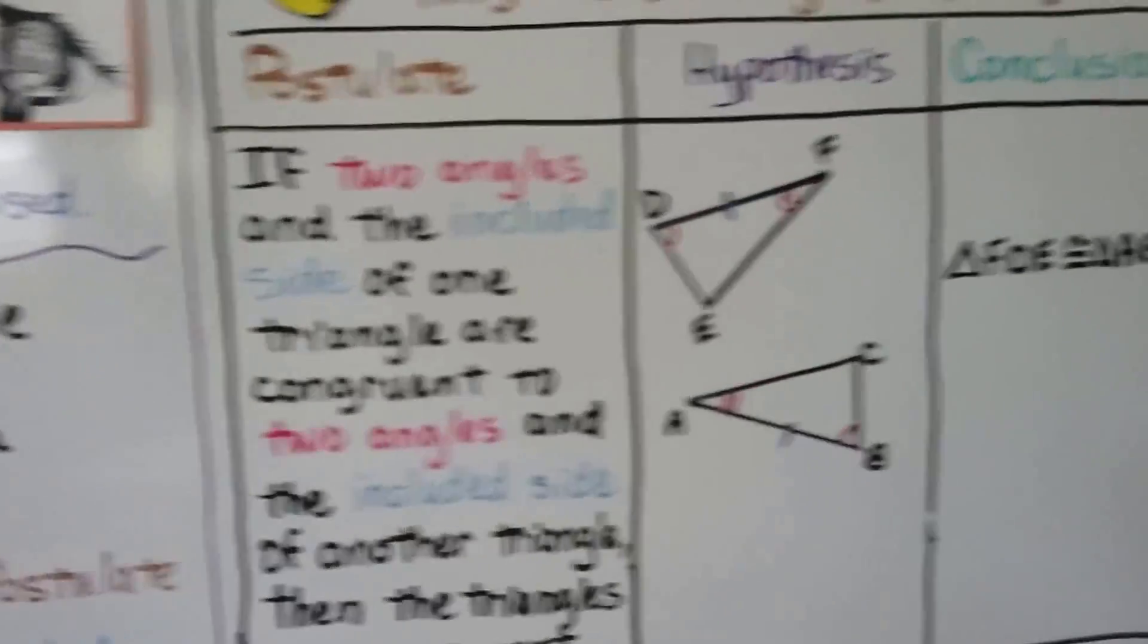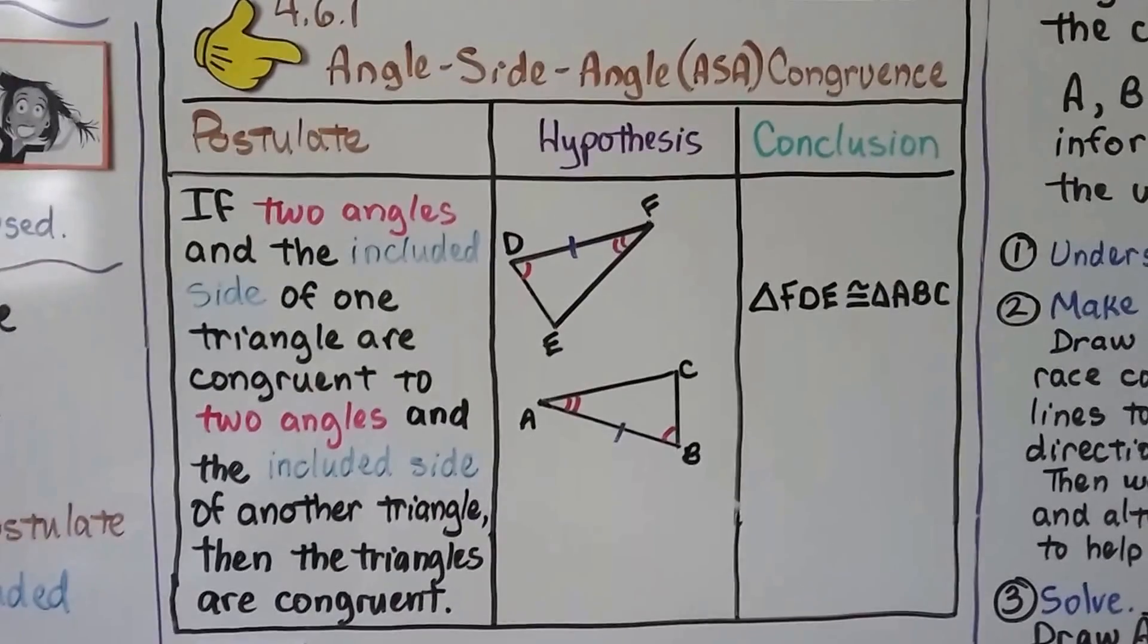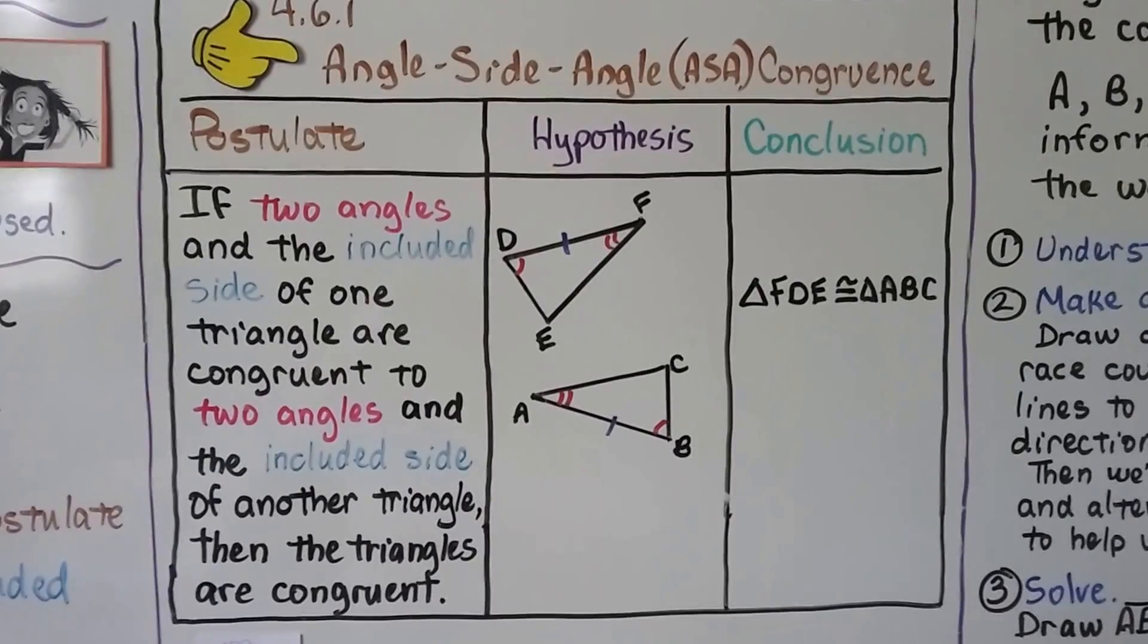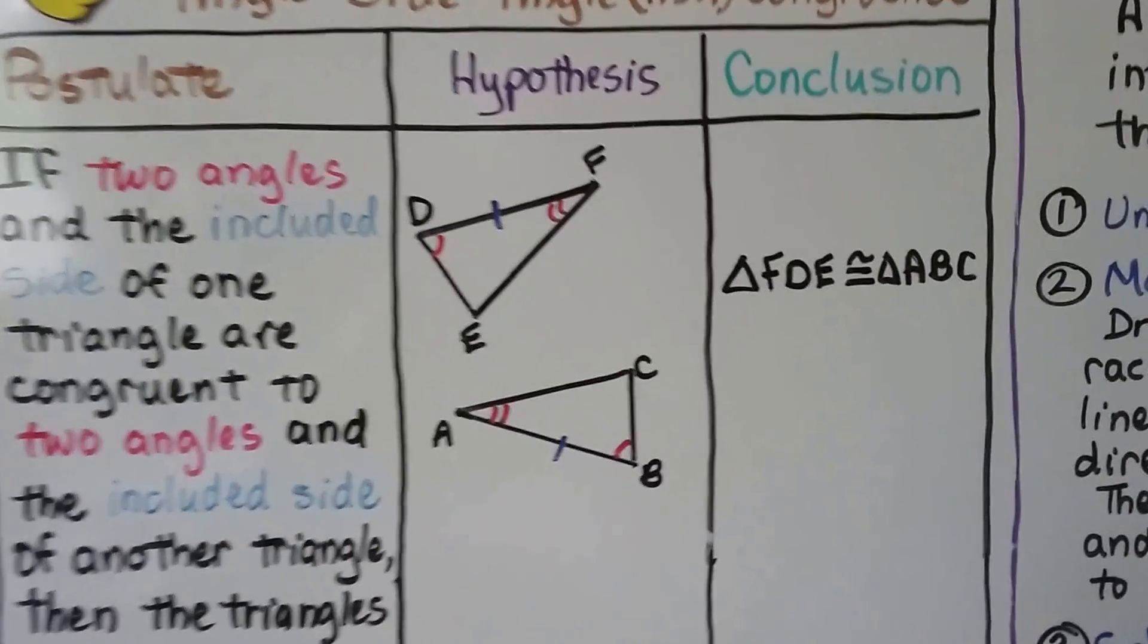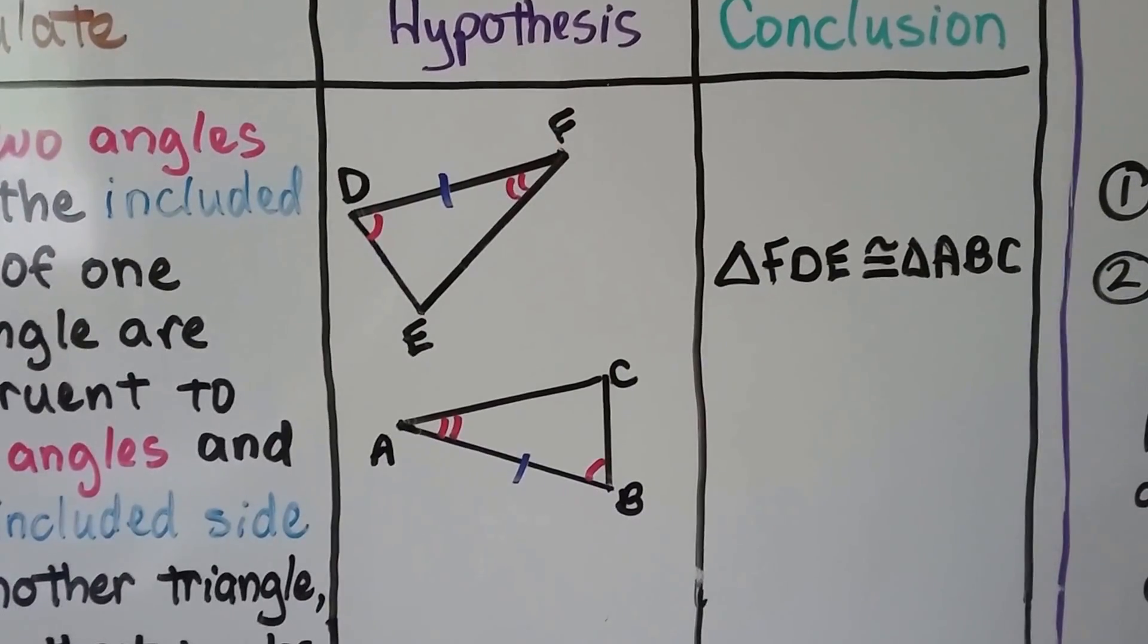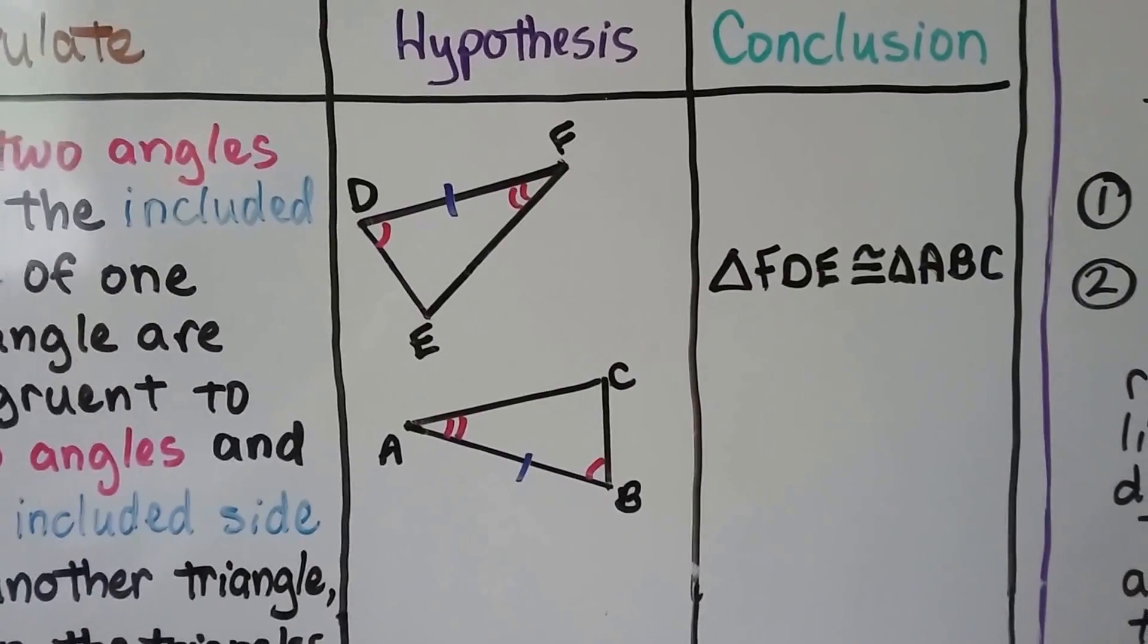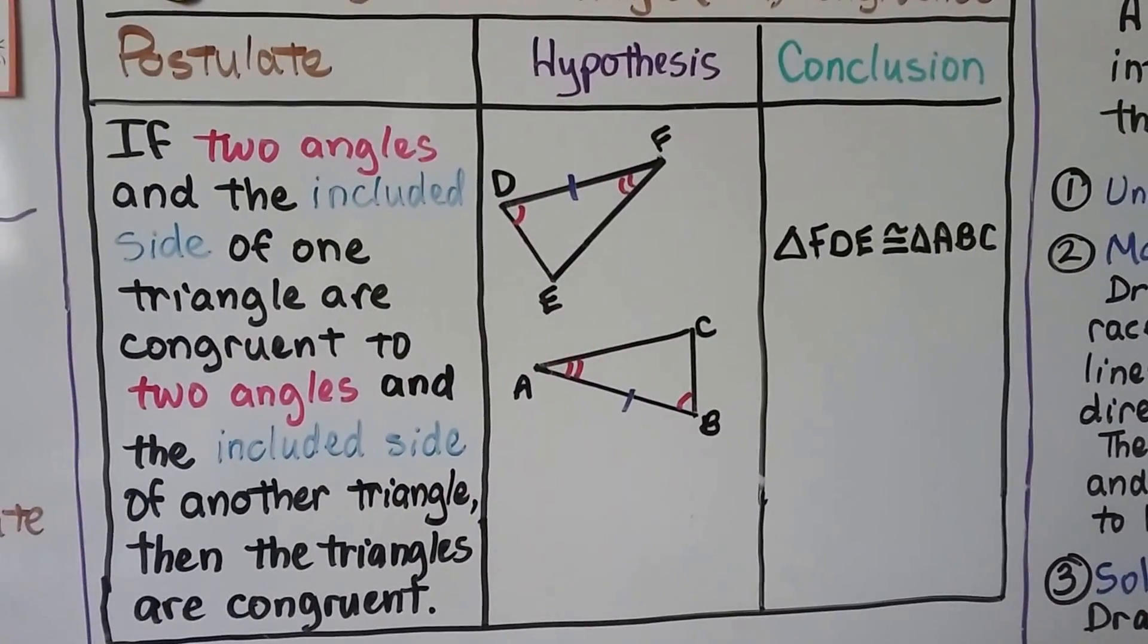Here's our angle-side-angle congruence postulate. If two angles and the included side of one triangle are congruent to two angles and the included side of another triangle, then the triangles are congruent. We have this hypothesis. We've got two triangles, and we can see D is congruent to B and A is congruent to F. We can also see segment DF is congruent to AB. That means our conclusion is that triangle FDE is congruent to triangle ABC.